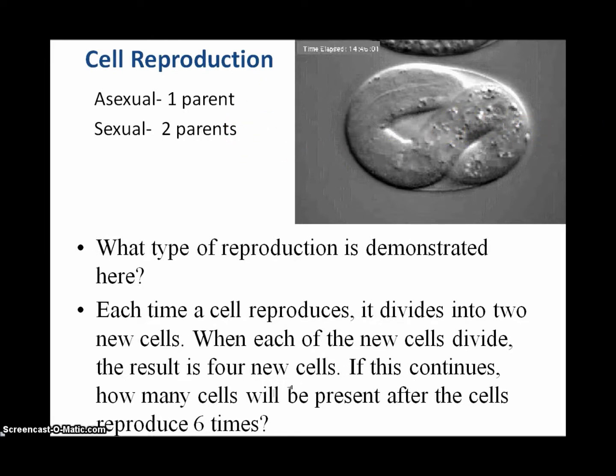You may recall then, in past discussions, that cell reproduction, ultimately there are two strategies for reproduction. The first is asexual, requiring one parent to produce multiple offspring, and the second one, or one offspring rather, and then sexual reproduction, which requires two parents to produce offspring.